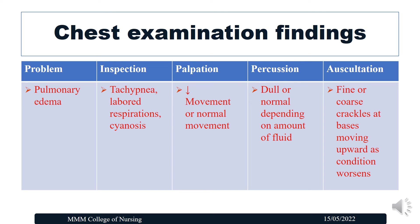The chest examination findings of pulmonary edema: in inspection, tachypnea, increased respiratory rate, and cyanosis — bluish discoloration of the skin due to decreased oxygenation to the tissues. In palpation, decreased or normal chest movement. In percussion, dull or normal depending on the amount of fluid present in the lung parenchyma. In auscultation, fine or coarse crackles at the base which move upward as the condition progresses.